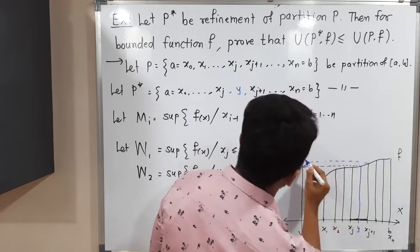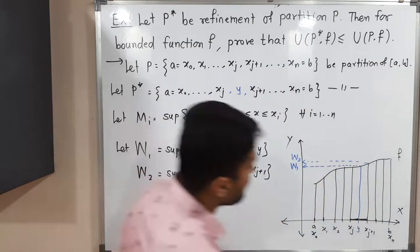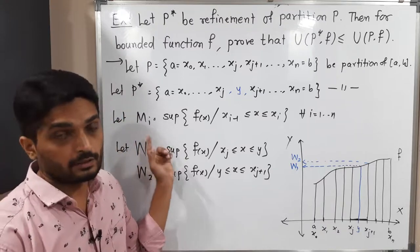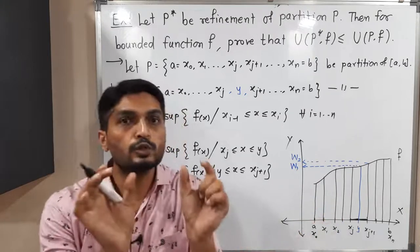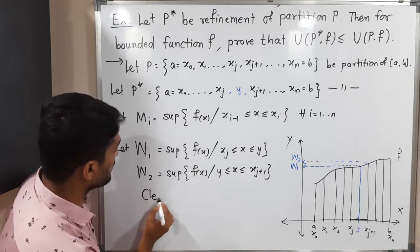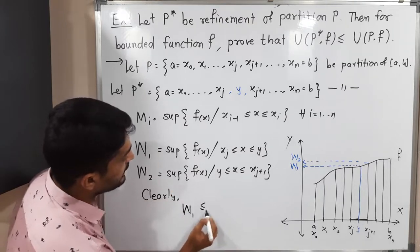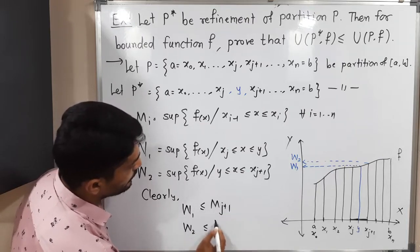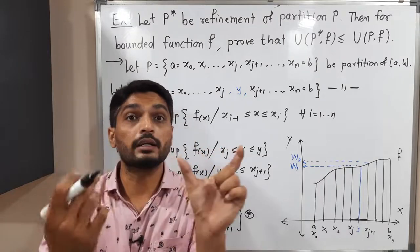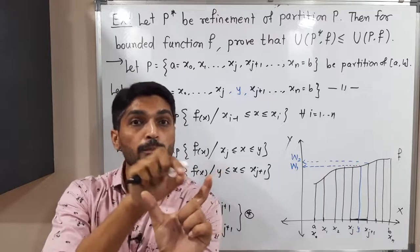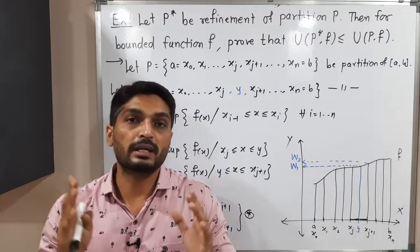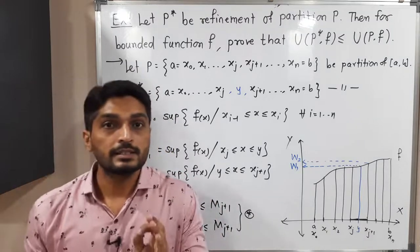If you consider the combined interval [Xⱼ, Xⱼ₊₁], its supremum will be capital Mⱼ₊₁. Because of the point Y we have two local suprema W₁ and W₂, but they satisfy one inequality: W₁ ≤ Mⱼ₊₁ and W₂ ≤ Mⱼ₊₁. This is true since Mⱼ₊₁ is the supremum over the entire interval, and the local suprema over sub-intervals are less than or equal to the global supremum. We call this equation (★).